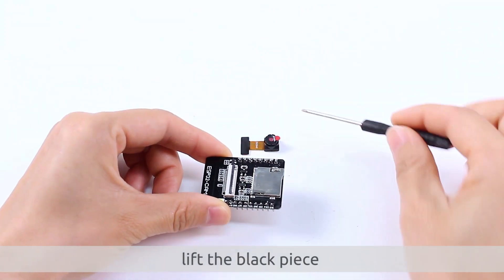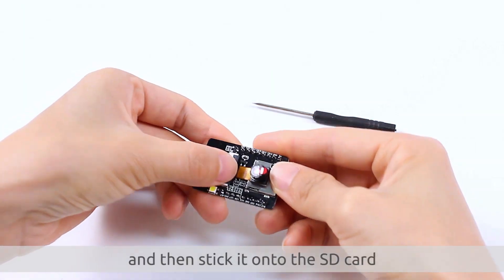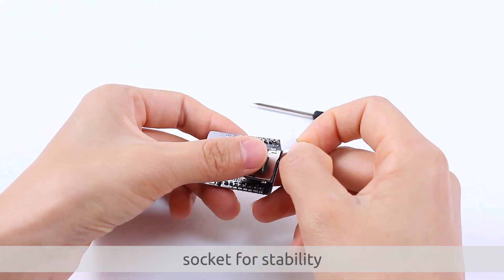Next, lift the black piece on the SP-32 cam connector. Insert the camera and then stick it onto the SD card socket for stability.